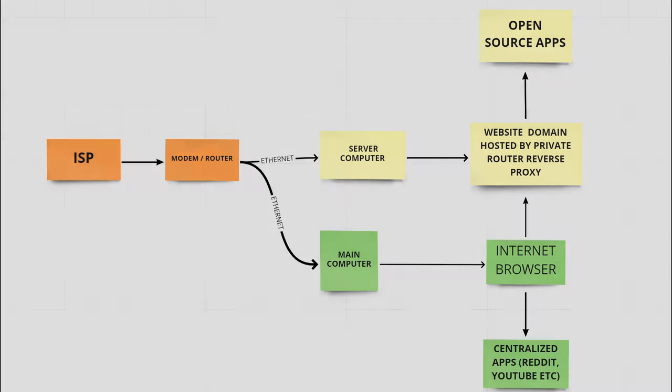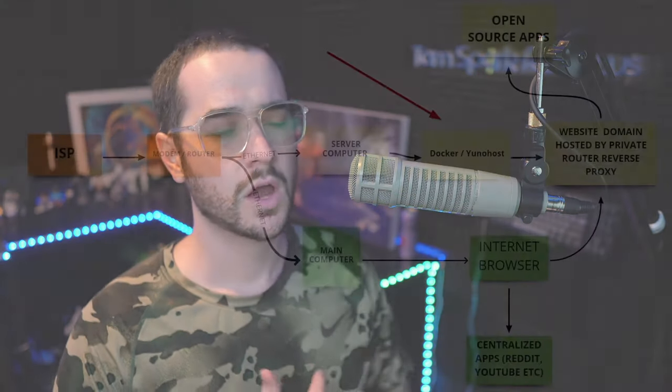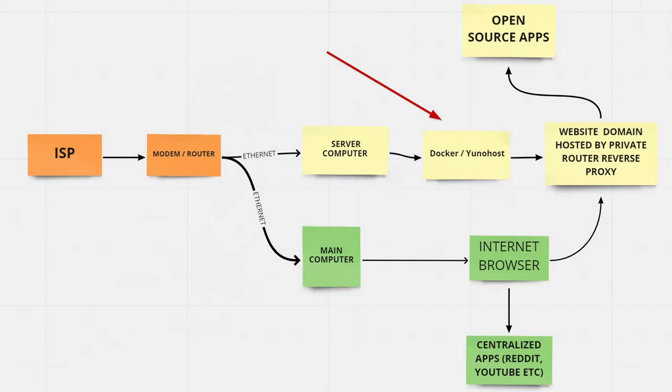Now with self-hosting, besides that hardware component, there's also the component of getting your server to work and function. Basically, there are various kinds of software you can use that provide front ends. There's stuff called Unihost, which I've been using lately — it's its own little interface. There's also Docker, and you can even just use Linux on your server to get it operating as a server.